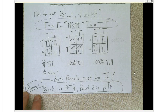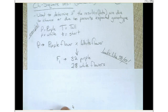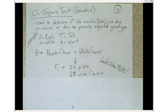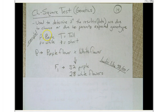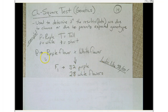The chi-square test in genetics is used to determine if the results of a genetics experiment are due to chance or due to the parents' expected genotype. Let's do an example. Big P is purple flowers, little p is white flowers, big T is tall, little t is short. We're crossing a purple flower plant with a white flower plant, and in the F1 generation we have 32 purple plants and 28 white flowers. We need to figure out the parents' genotypes and whether this data is close enough to be considered valid.